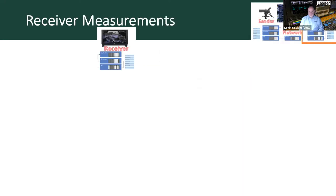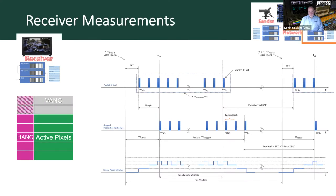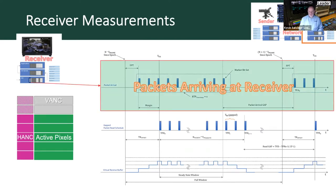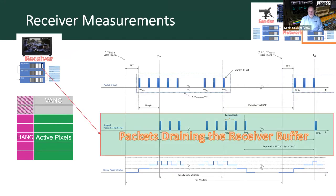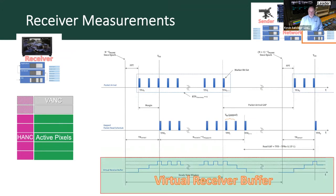Let's take a look at how you measure these, going first to the receiving device. Many of you will be familiar with the graphic on the right, but have you looked at it in detail and understood what it's actually telling you? It shows the packets arriving at the receiver — coming off the network and hitting the network interface card. It takes time for them to be processed before they can be read out. The second graph shows that processing time, and the graph at the bottom is the virtual receiver buffer.